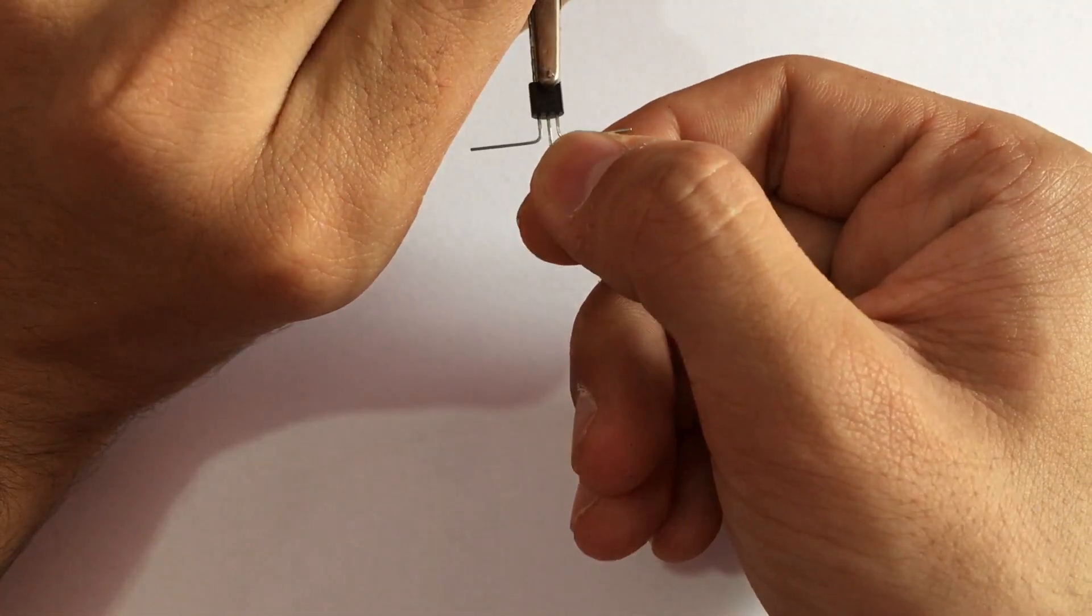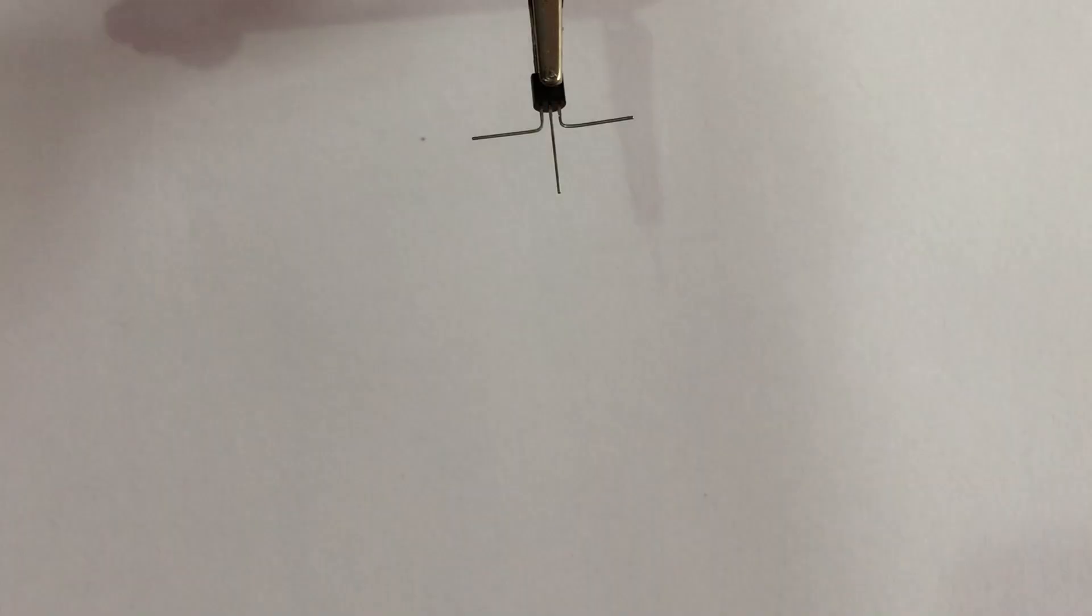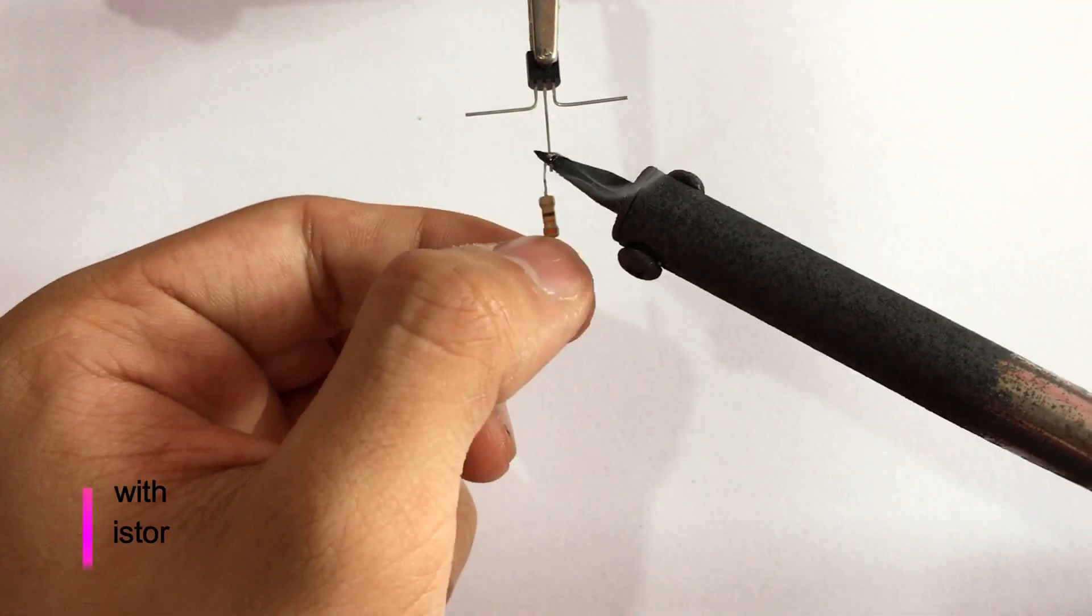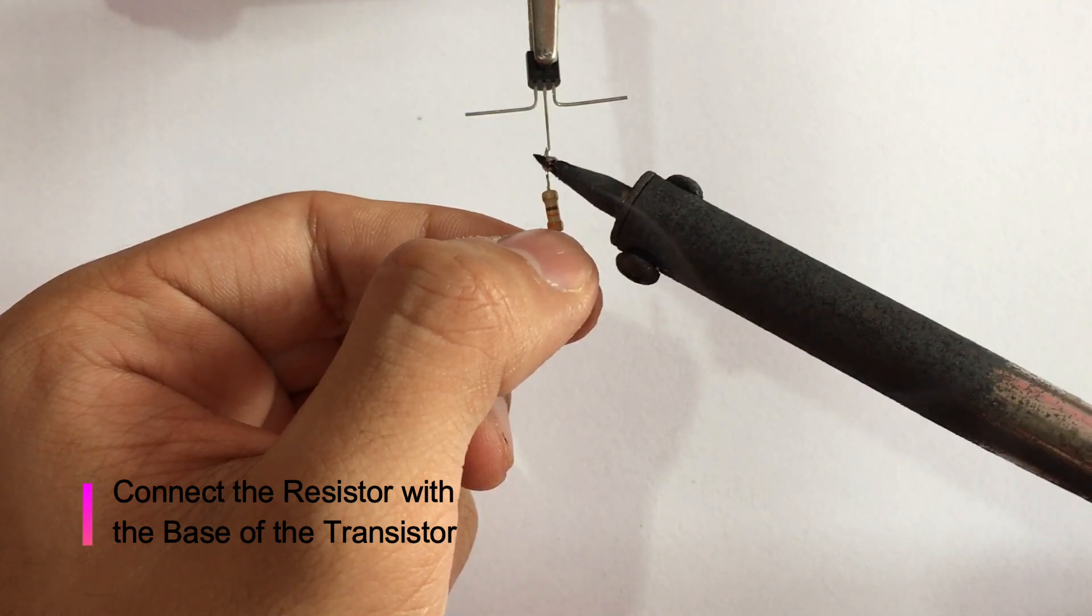First of all we will take the transistor. Now we will connect the resistor with the base of the transistor.